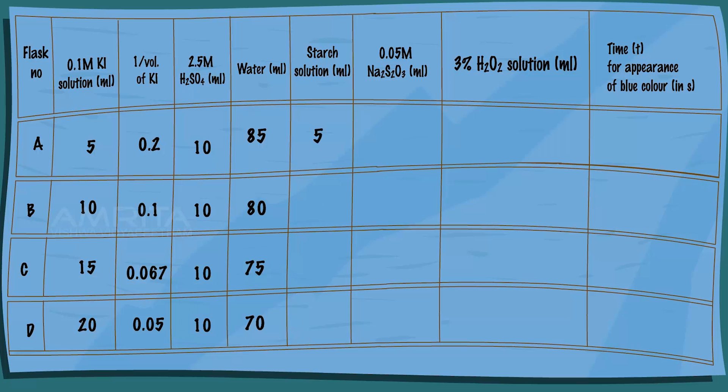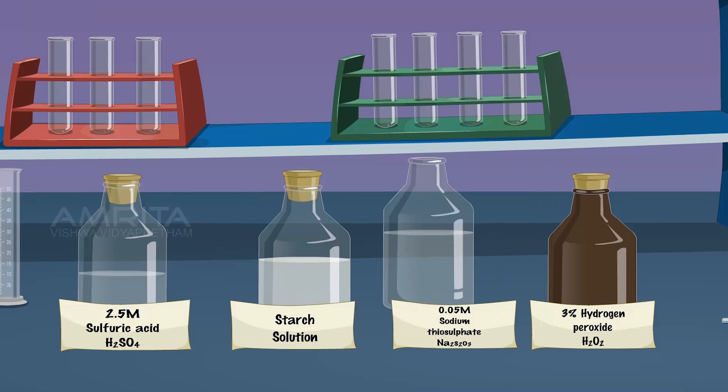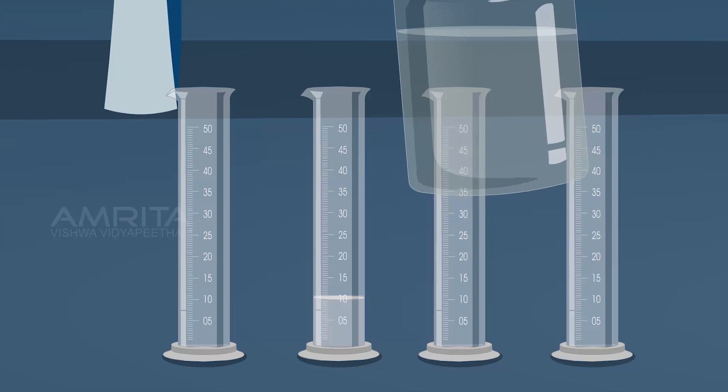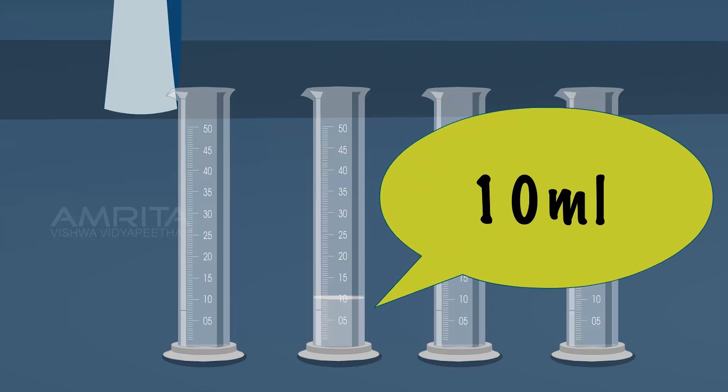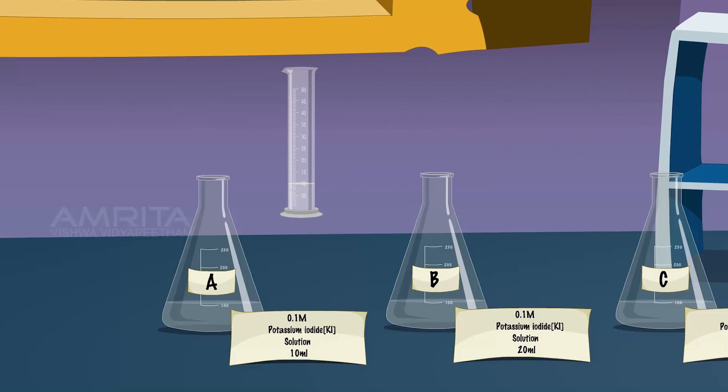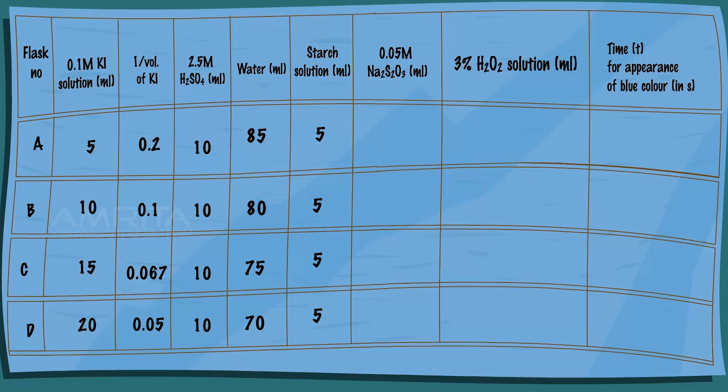Repeat the same procedure for the remaining flasks. Then take 10 ml of 0.05 molar sodium thiosulfate solution. Add it into flask A. Repeat the same procedure for the remaining flasks.